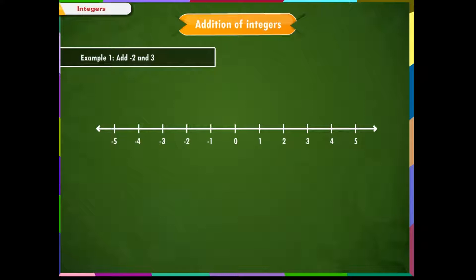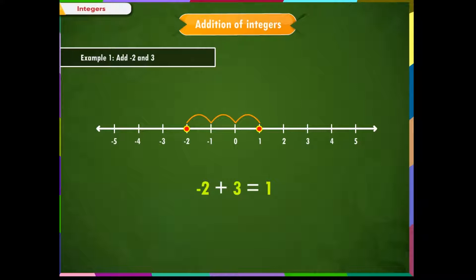Example 1: Add minus 2 and 3. We write this problem as minus 2 plus 3. We use a number line to solve this problem. Mark the first integer on the number line. Since we are adding a positive integer, that is plus 3, as per our rule, we start from our first integer minus 2 and move three steps towards right. We reach at 1. Therefore, minus 2 plus 3 is equal to 1.